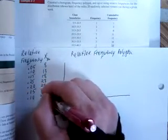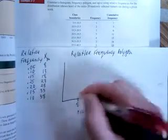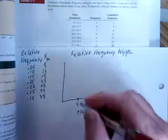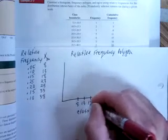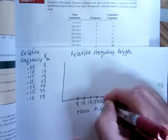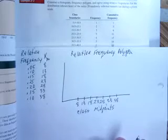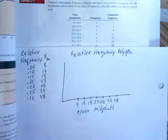So you're going to add 5.5 to 10.5 and get 16, and divide 16 by 2 and get 8. Then since the class width is 5, you're going to add 5 to 8 and you're going to get 13. Add 5 again and you're going to get 18. Add 5 again and get 23. Add 5 again, 28, 33, and 38. These are the values that you use for your x-axis.